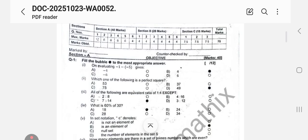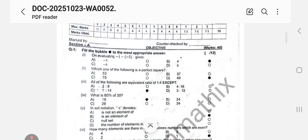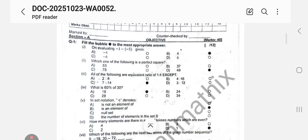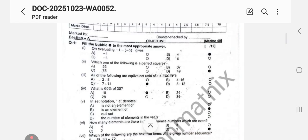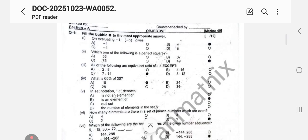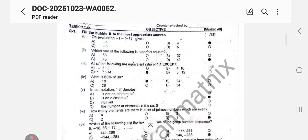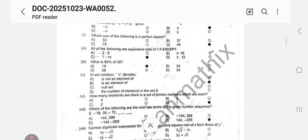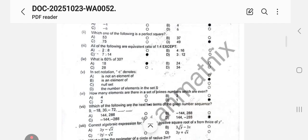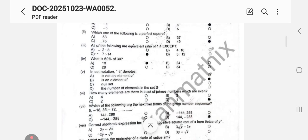Question number 1: Fill in the bubble with the most appropriate answer. On evaluating minus 1 minus minus 5 gives - minus minus would be plus, so it would be minus 1 plus 5, which gives you 4. So B option is correct. Which one of the following is a perfect square? You can see only 49 is the perfect square, which is the square of 7: 7 times 7 equals 49.